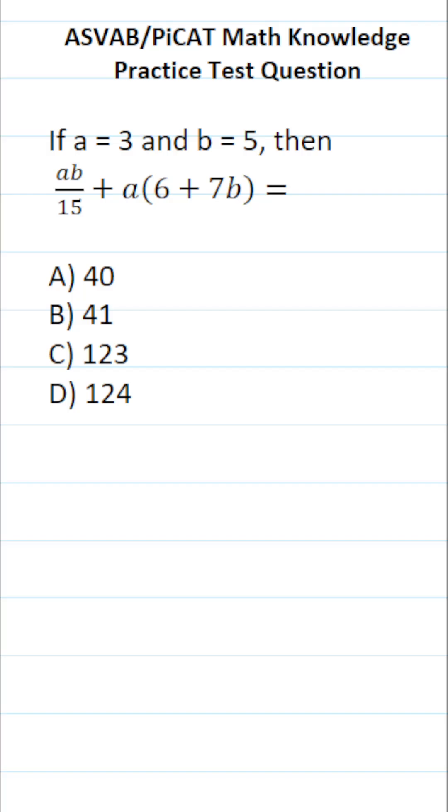In other words, we're going to be evaluating this expression. So let's start by copying it down. We have A times B over 15 plus A times 6 plus 7 times B. And we want to know what this expression equals when A equals 3 and B equals 5.